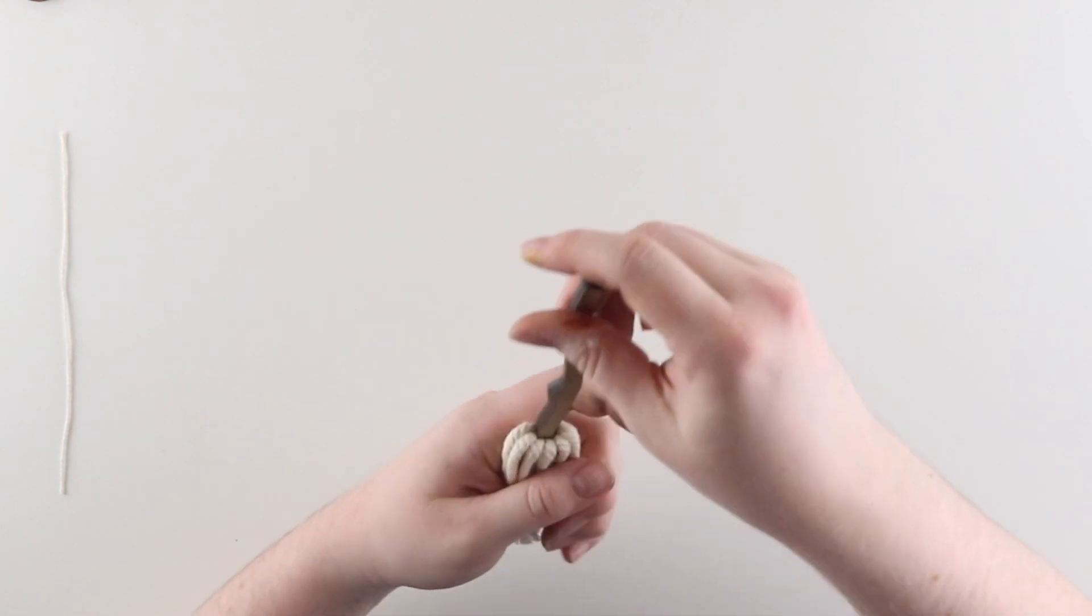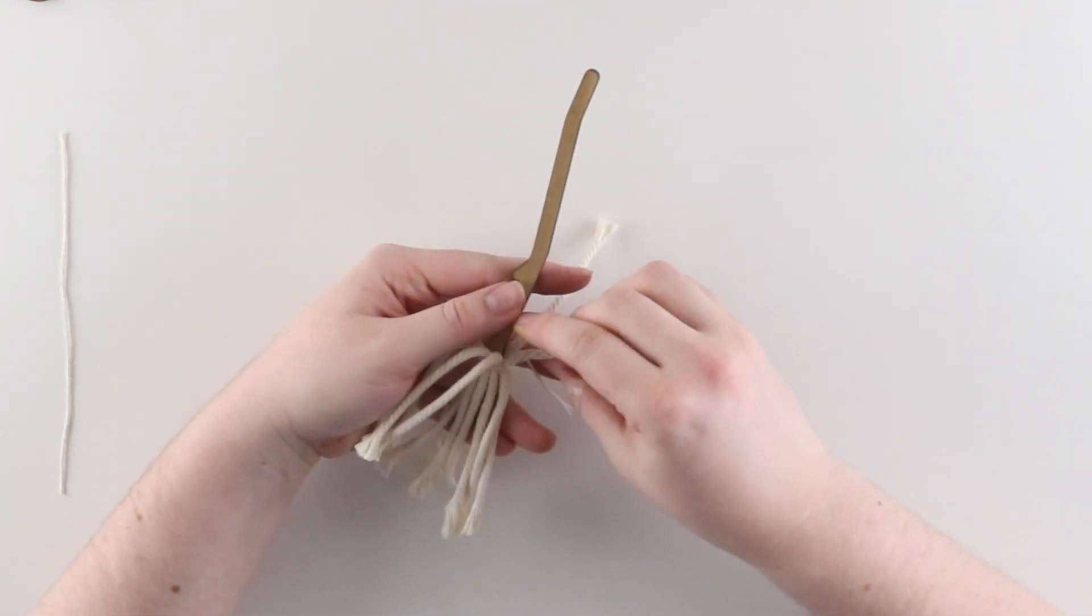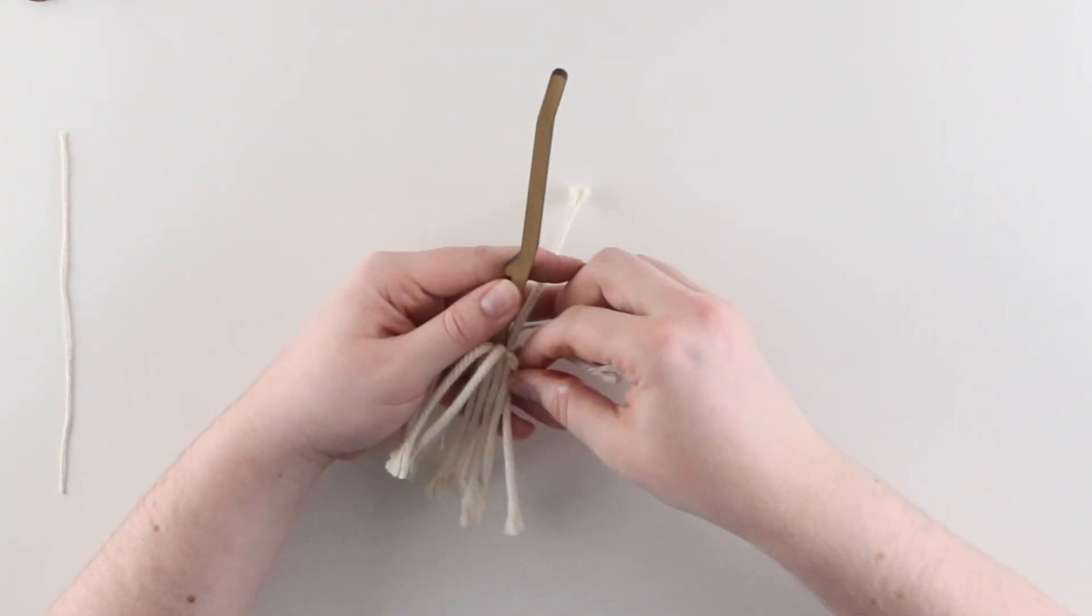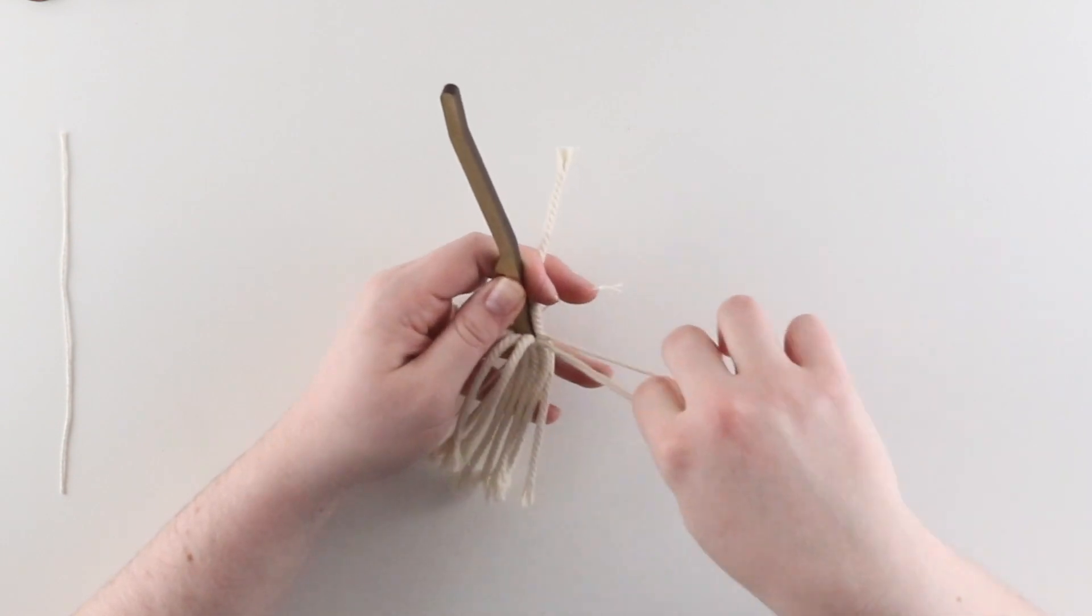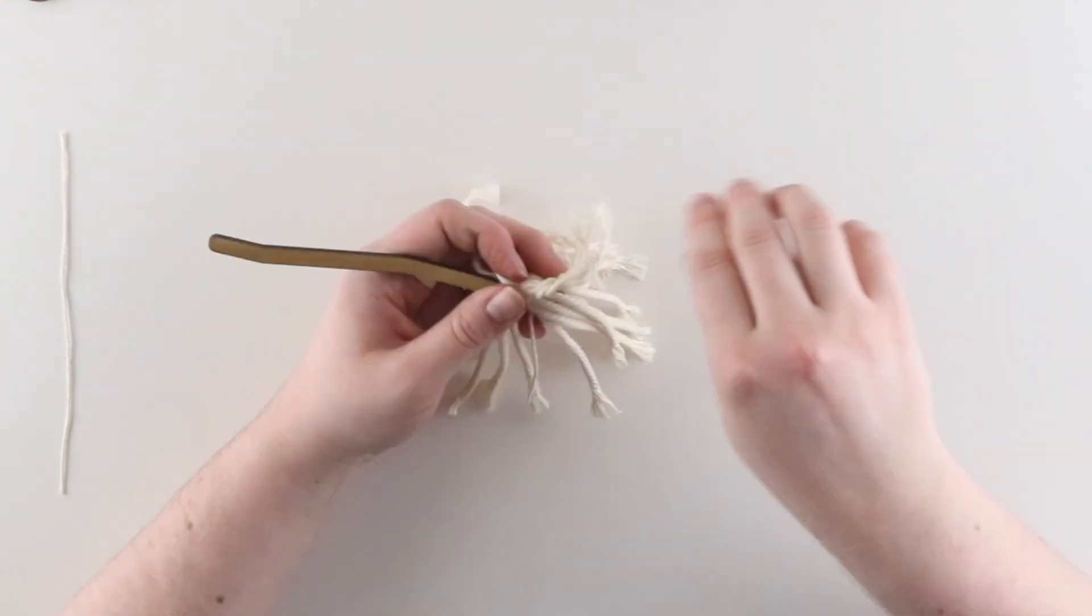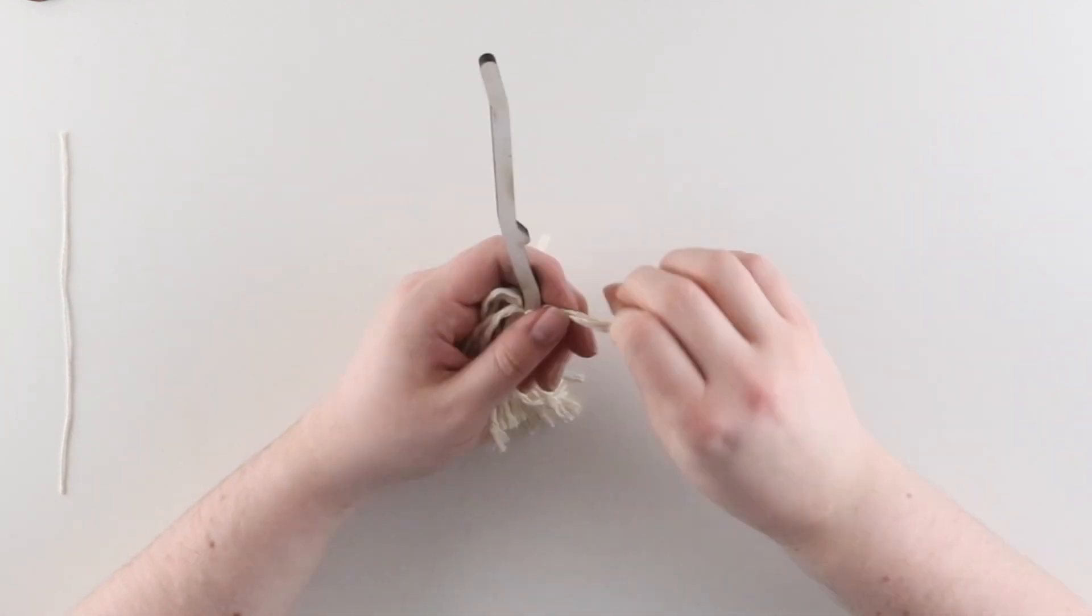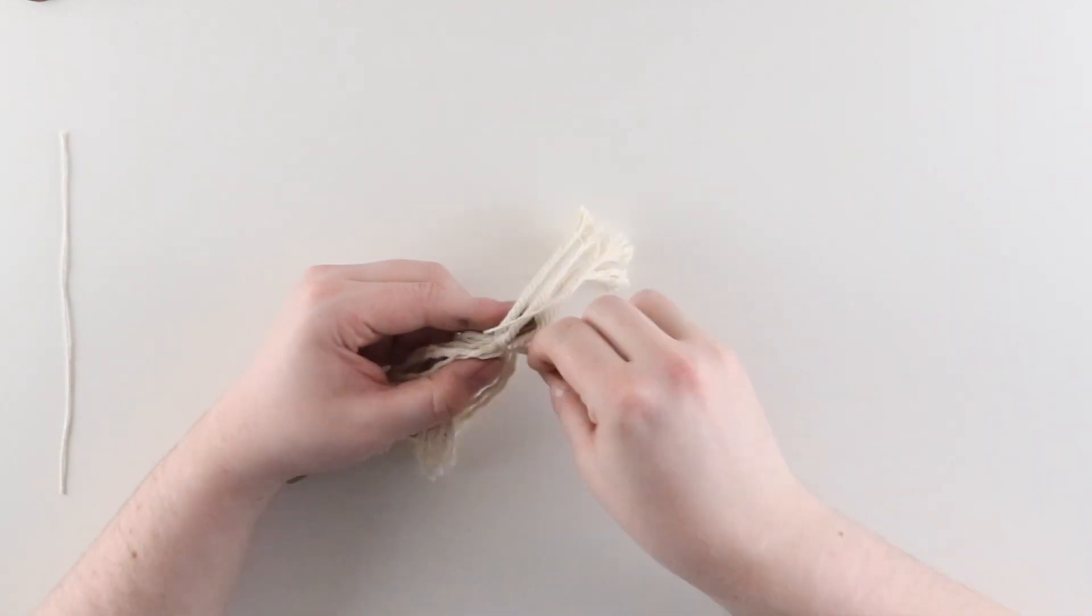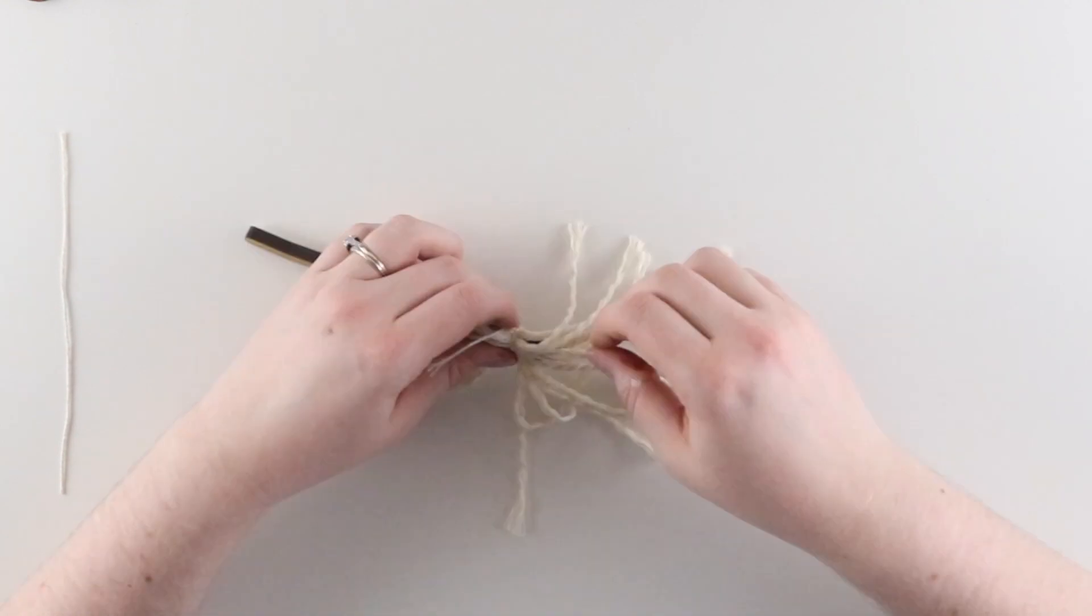Once that is secure we're going to unravel all of the ropes to make them four individual strands. You can unravel them from the bottom or you can place your finger in between the strands near the top and pull down to start to unravel them. Make sure you do all of the rope pieces and that nothing is still twisted together.